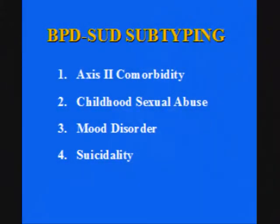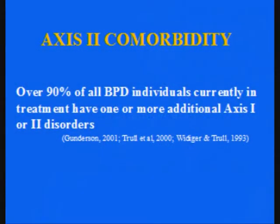The first way is to look at borderline patients who also have another Axis I or personality disorder. The second way is to look at borderline patients who do versus do not have a self-reported history of childhood sexual abuse, who do versus do not have a current or lifetime mood disorder, and who do versus do not have a significant suicide history. Research by others found that over 90% of all borderline patients in treatment have at least one additional Axis I or Axis II disorder, so you're automatically dealing with a complex patient — not just someone with a personality disorder, but also depression, anxiety, substance abuse, or another personality disorder on top of that.